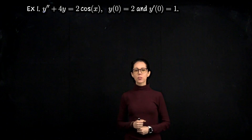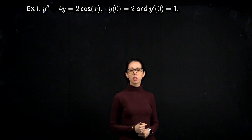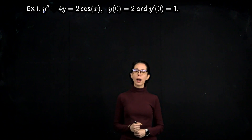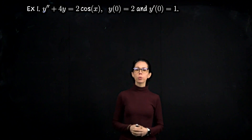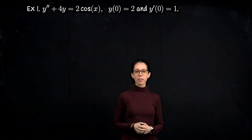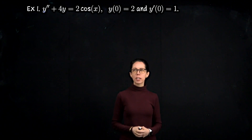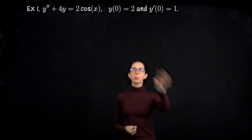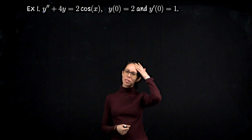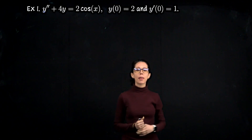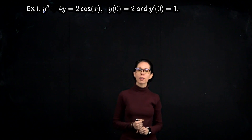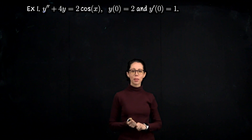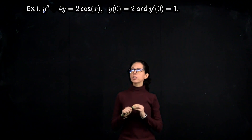For this first example, we are looking at the equation y double prime plus 4y equals 2 cosine of x. The forcing function is that 2 cosine of x on the right-hand side. We also have some initial conditions, but we won't worry about those until we've found the general solution using the method of undetermined coefficients. So let's go straight to the method.